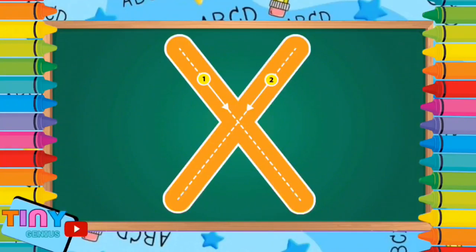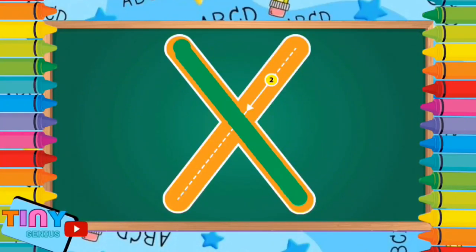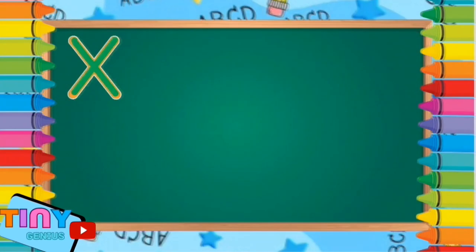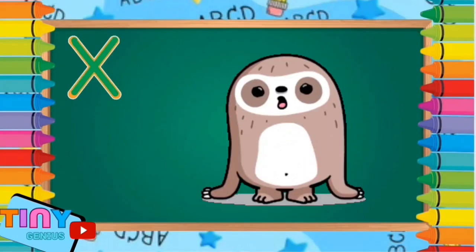And the next letter, X. Slant down out, slant down in. X is for xenarthra.